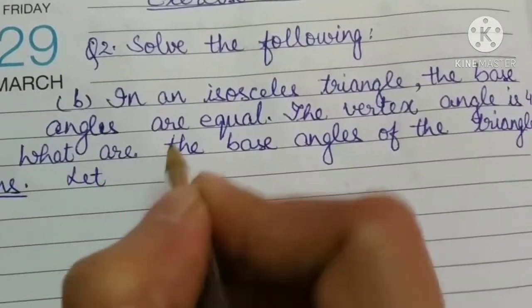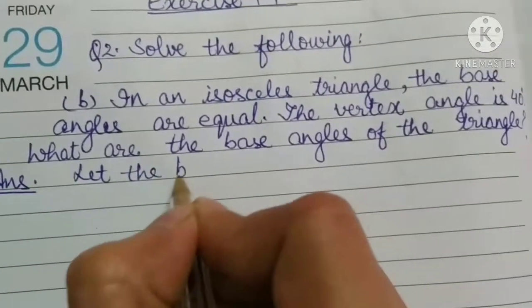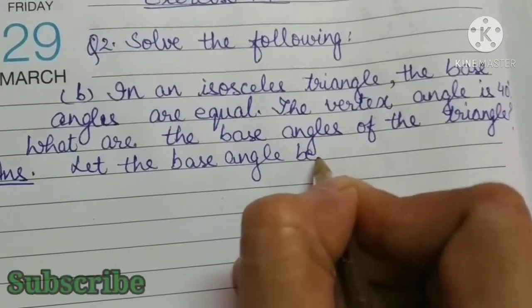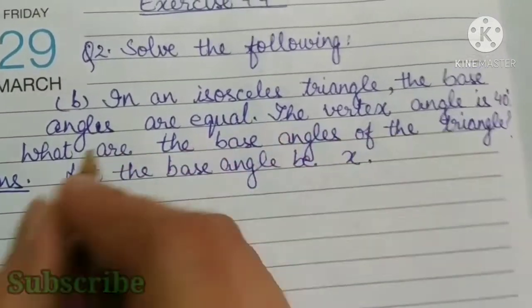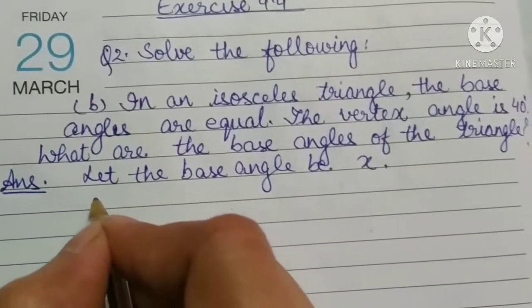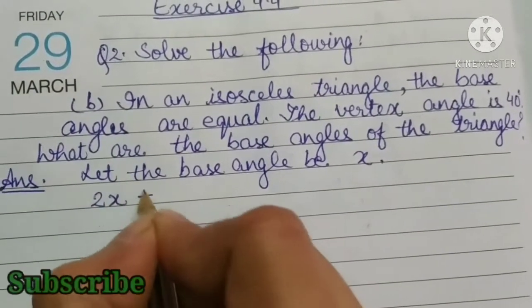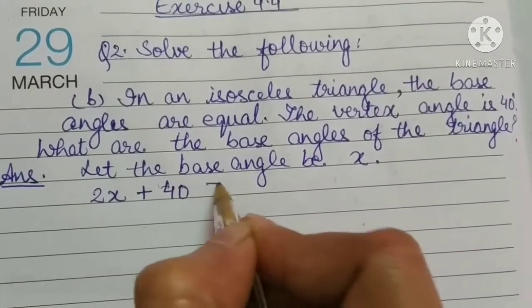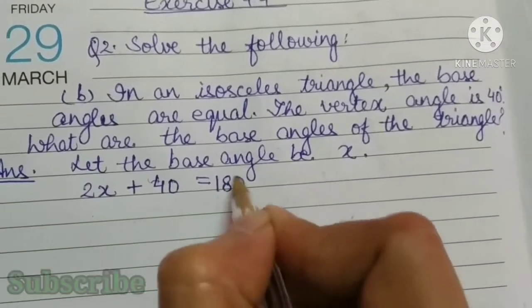Let the base angle be x. What will be the sum? 2x plus vertex angle is 40 degree. So, 40 is equal to 180.